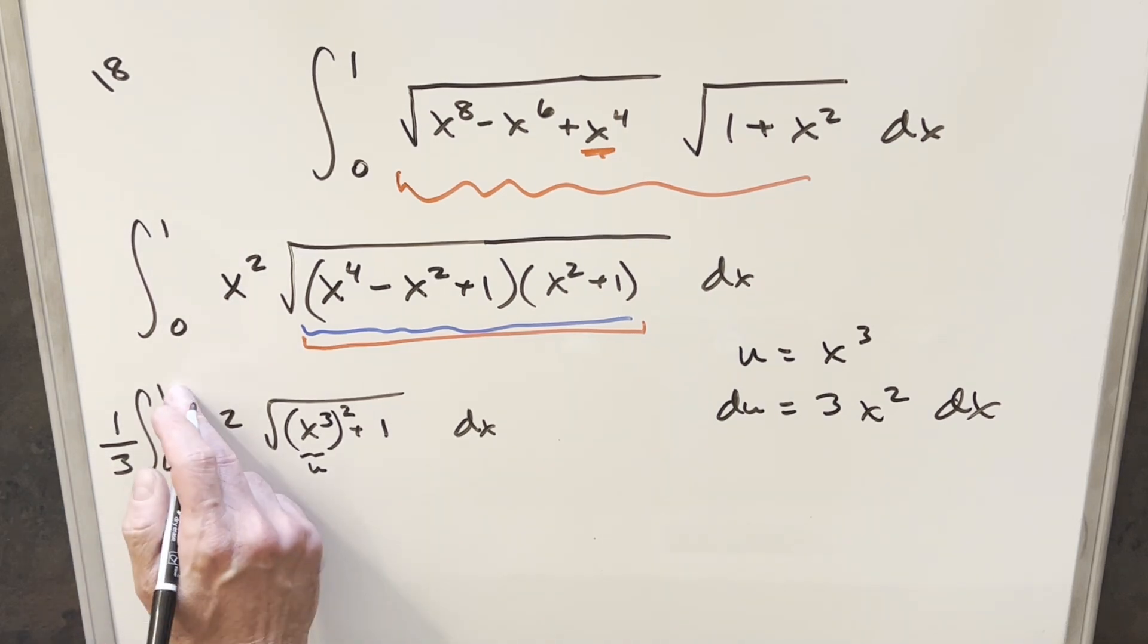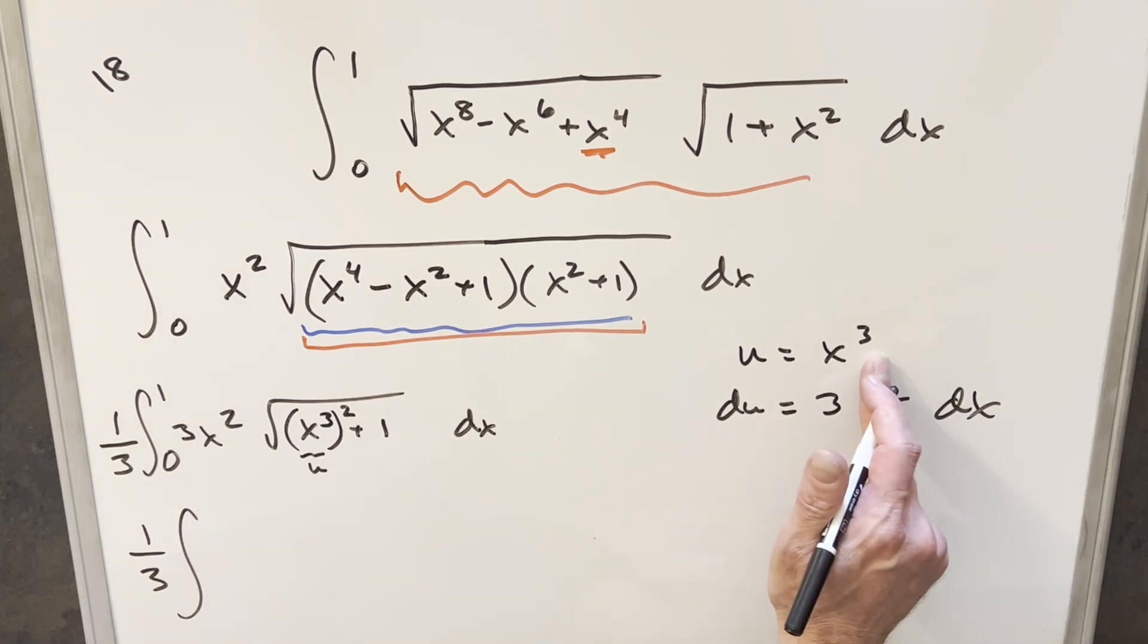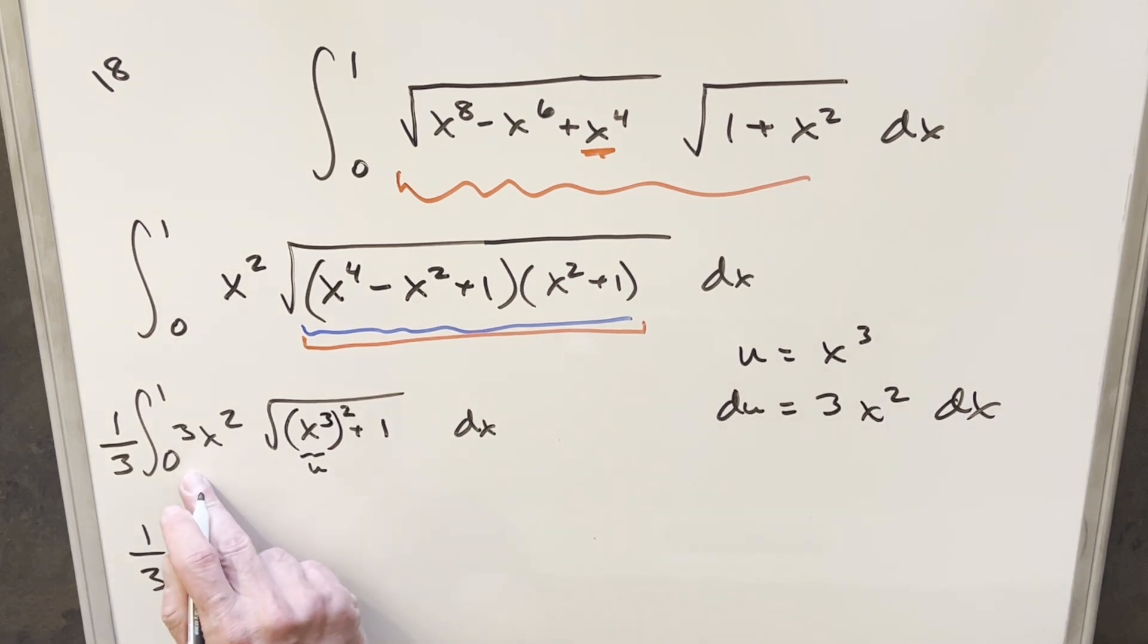So I'll have 1 third in front. First, let's plug in 1 here, but 1 cubed is 1. Take 0. Plug in 0. 0 cubed, of course, is 0. This is all going to be du. So let's just look at the radical. So this is going to transform into the square root of u squared plus 1 du.